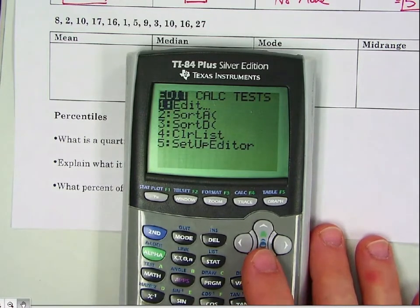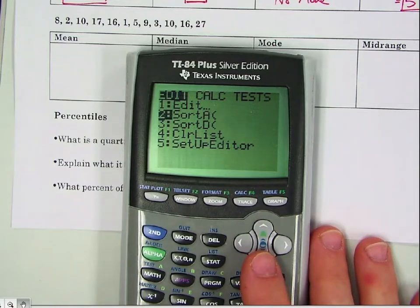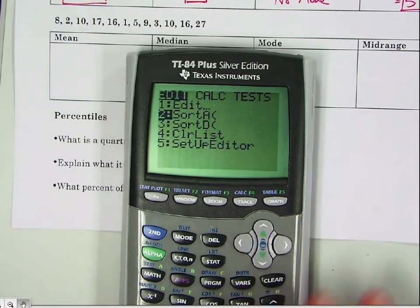Another word for it is sorting. Sort A stands for sort ascending. Sort D stands for sort descending. So we want to sort ascending from least to greatest.